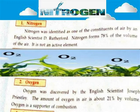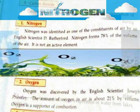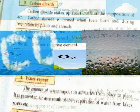Oxygen was discovered by the English scientist Joseph Priestley. The amount of oxygen in air is about 21% by volume. Oxygen is a supporter of combustion.